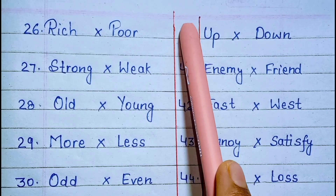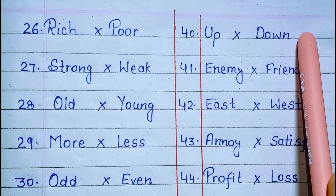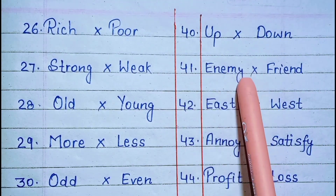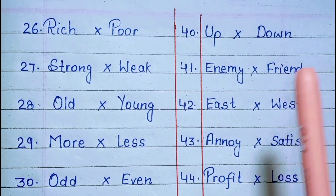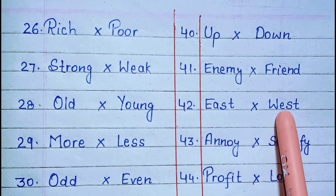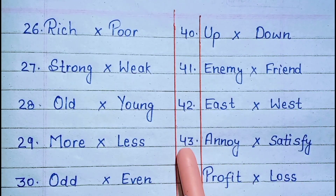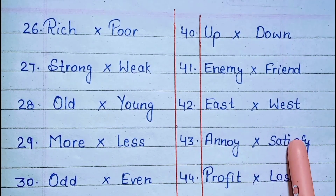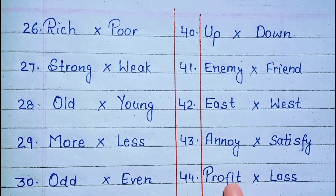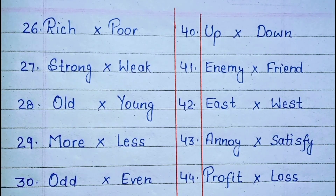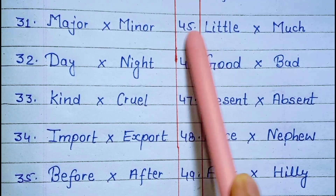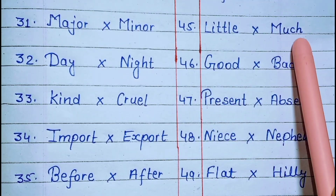40. Up, down. 41. Enemy, friend. 42. East, west. 43. Annoy, satisfy. 44. Profit, loss. 45. Little, much.